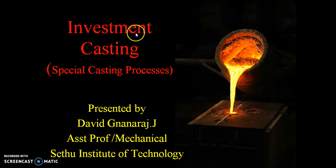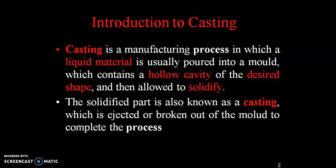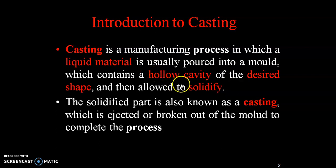Today we are going to see about investment casting. It is one type of special casting process. Before going to investment casting, we should know about what is casting. Casting is a manufacturing process in which a liquid material is usually poured into a mould which contains a hollow cavity of desired shape and then allowed to solidify. The liquid material is called molten material, produced by a furnace. It then goes into the hollow cavity and is allowed to cool, making a new product. This solidified part is also called a casting, which is ejected or broken out of the mould to complete the process.